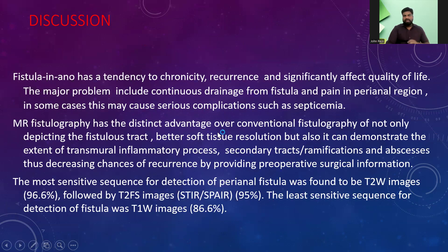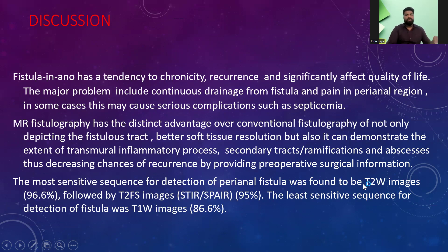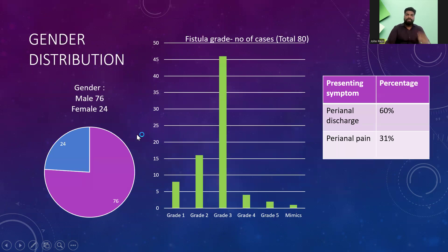In discussion, MRI has a distinct advantage with better soft tissue resolution, better delineation of the secondary tracks, and depiction of the transmural inflammatory process. The most sensitive sequences are T2-weighted images, followed by T2 fat-suppressed sequences, for pictorial depiction. Male predisposition is confirmed, with the most common type being Grade 3 transsphincteric fistula. Perianal discharge and perianal pain are the most common symptoms.